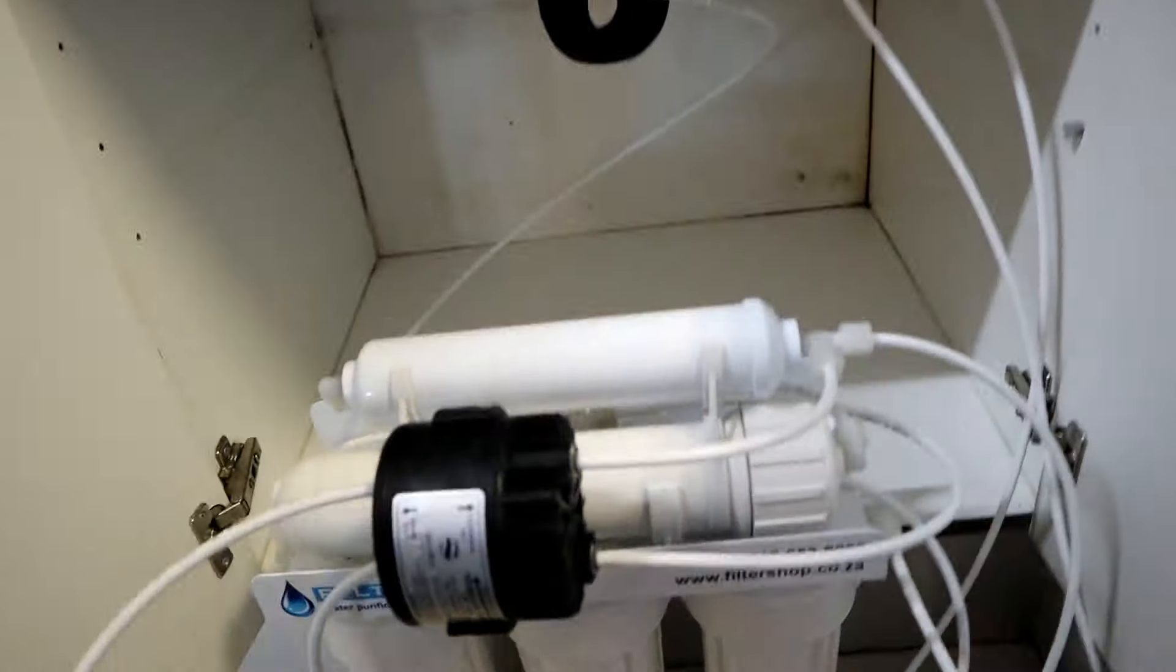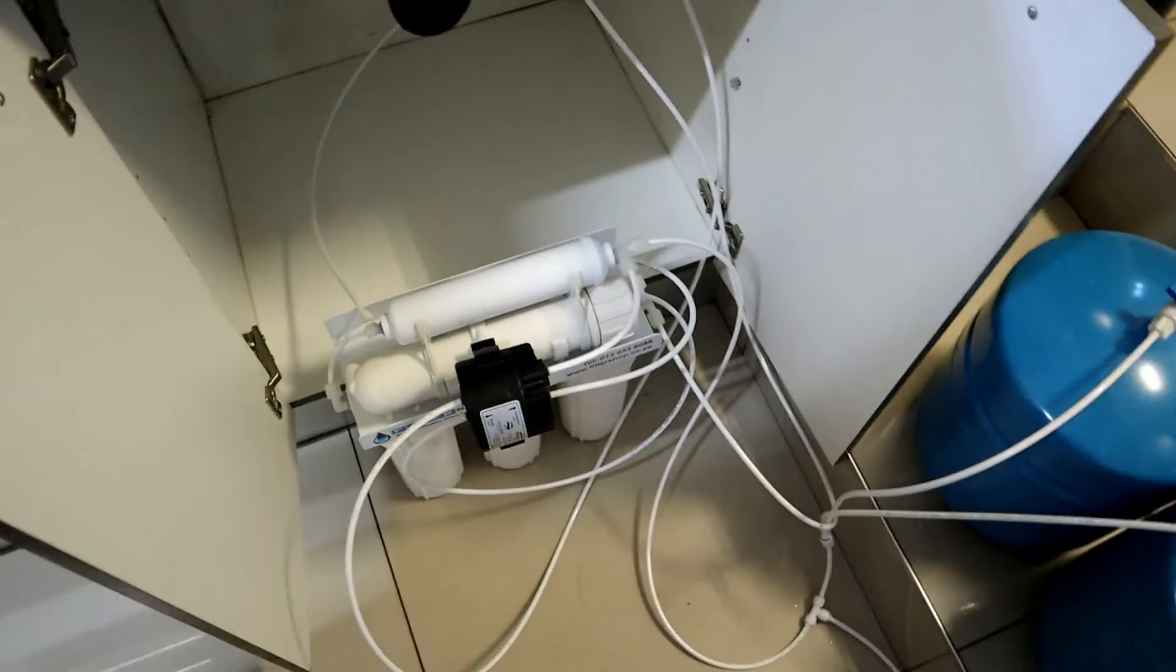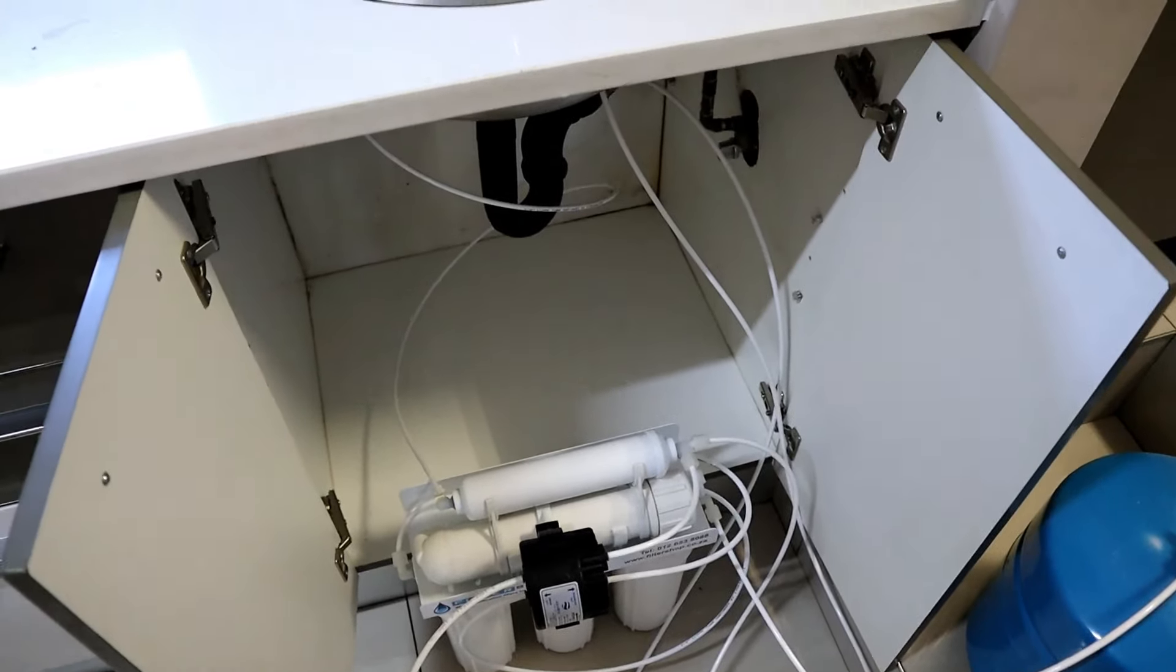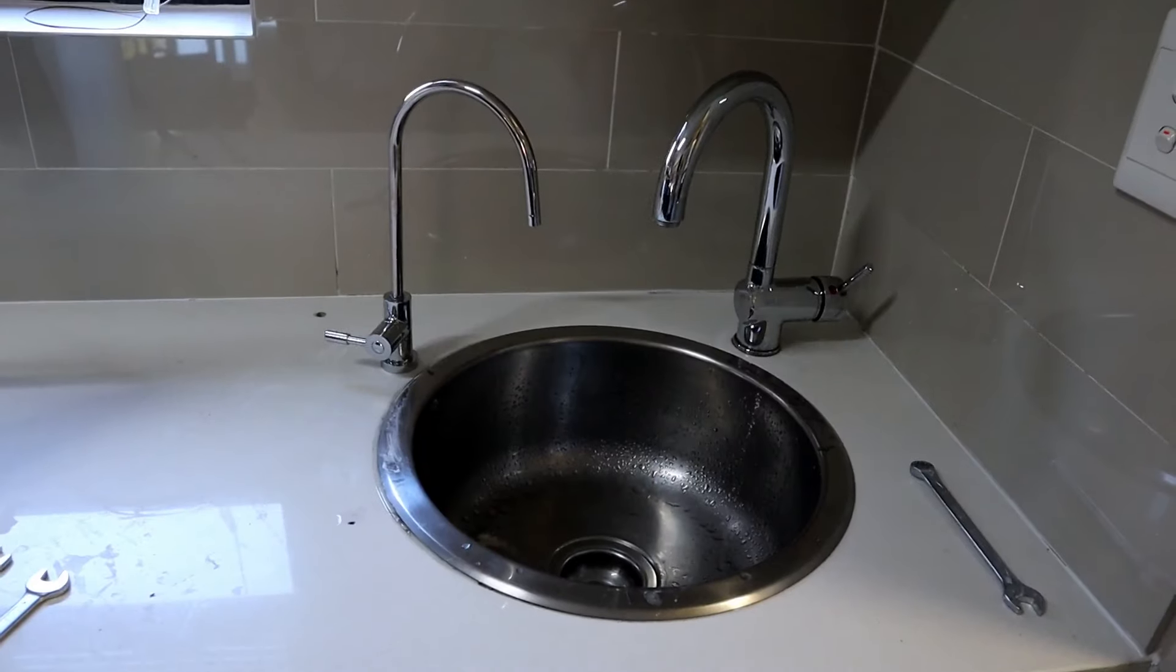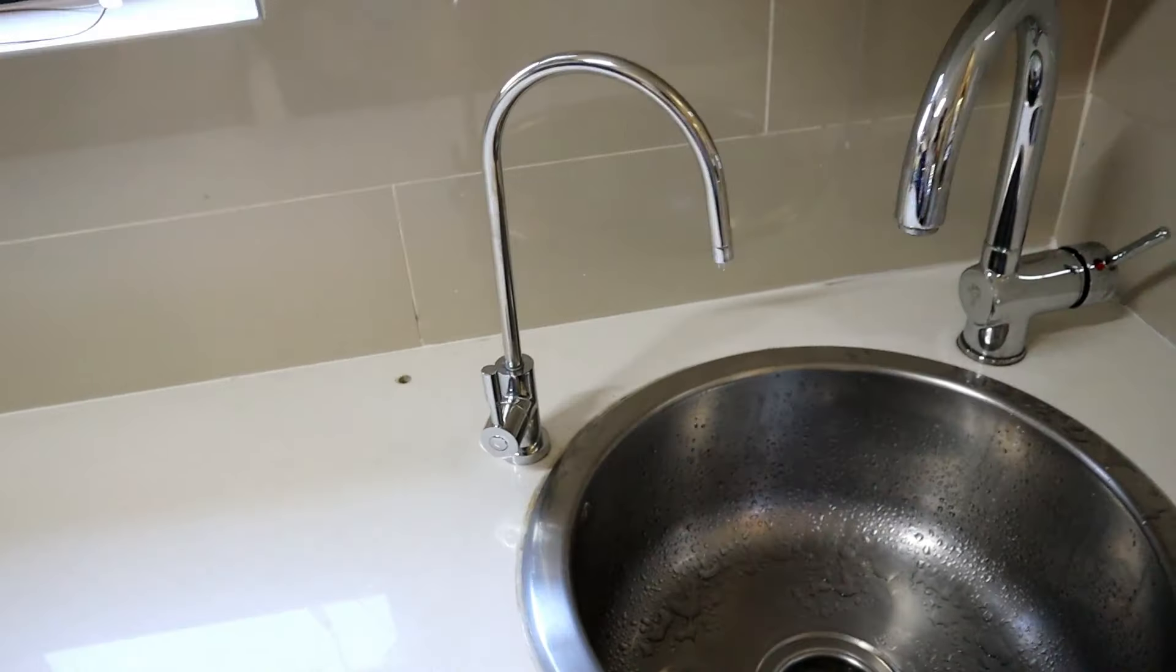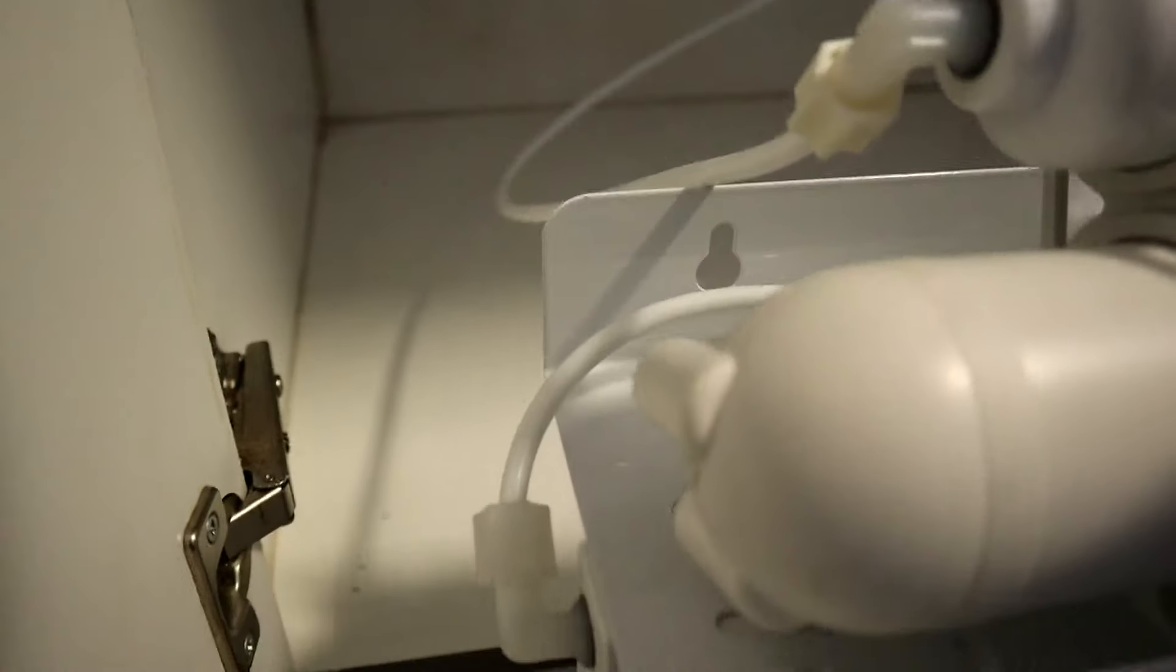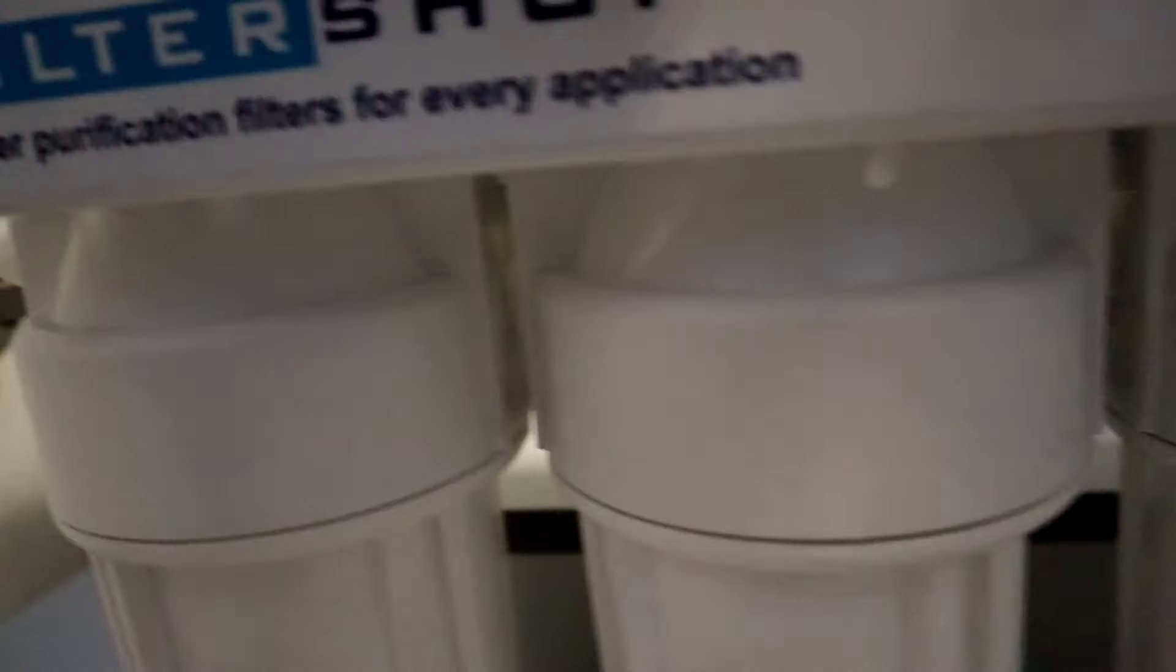Then open the water supply and check all your piping for leaks. Make sure there isn't anywhere where there's any leaks. If there is, first close the water supply and fix them. Make sure to check everything in a lot of detail just in case there is something there. The system will start running now.